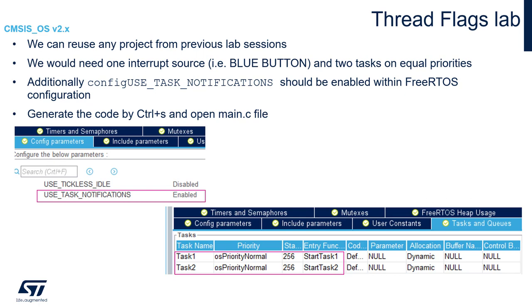Task 1 with StartTask1 entry function and Task 2 with StartTask2 function. Priority for both should be the same, for example OS priority normal, and the stack size could be the same as well — for example, 256. After this, please generate the code and open the main.c file.